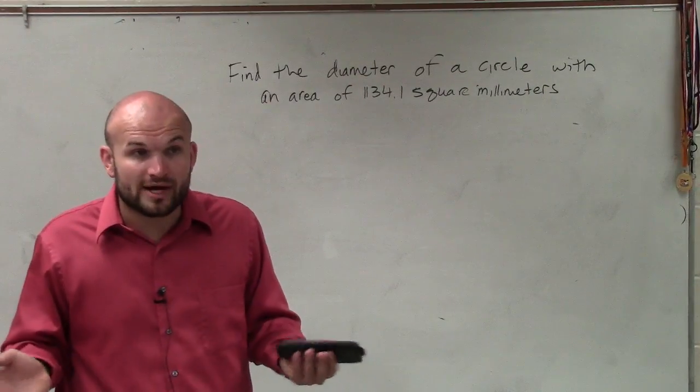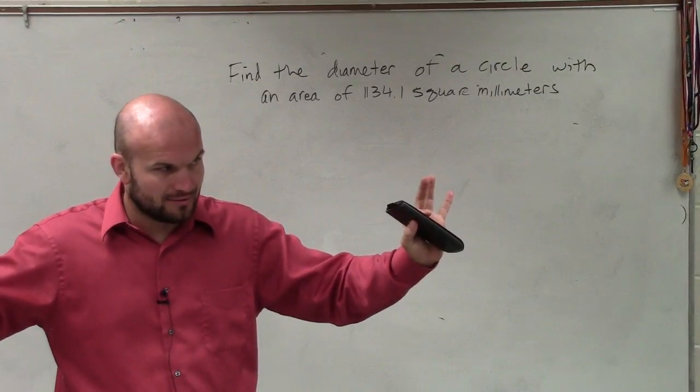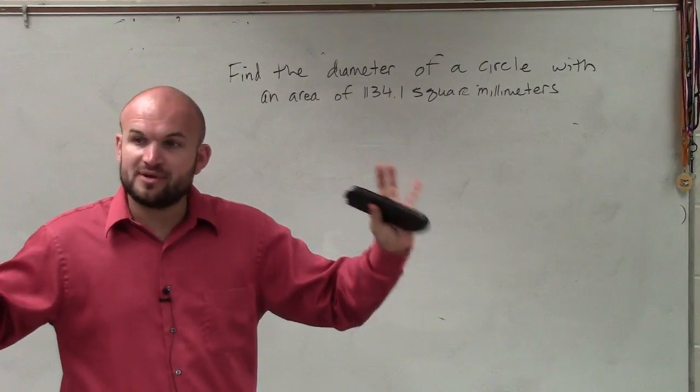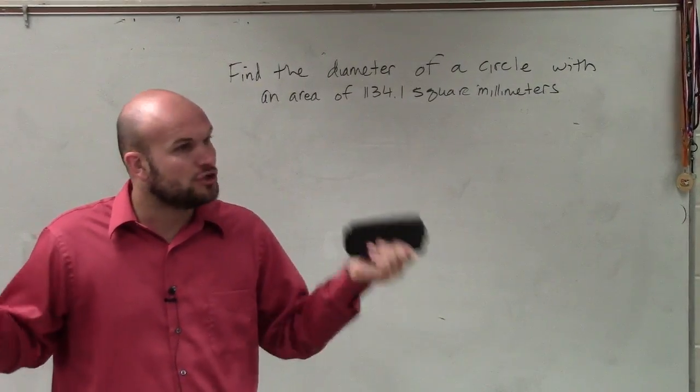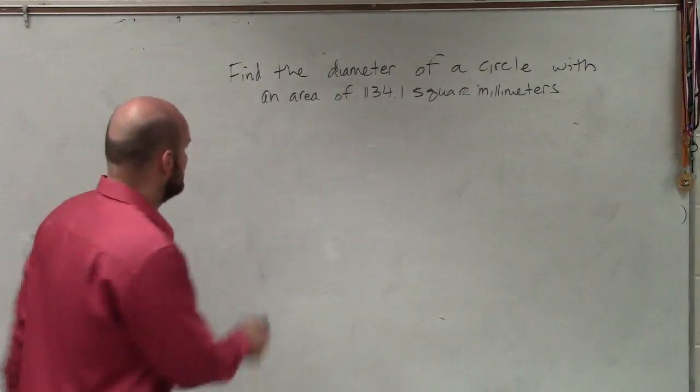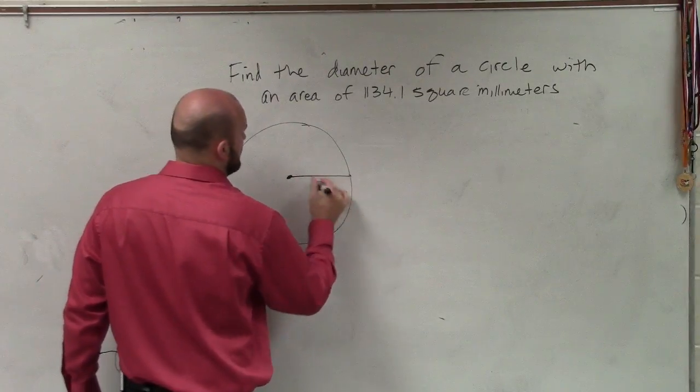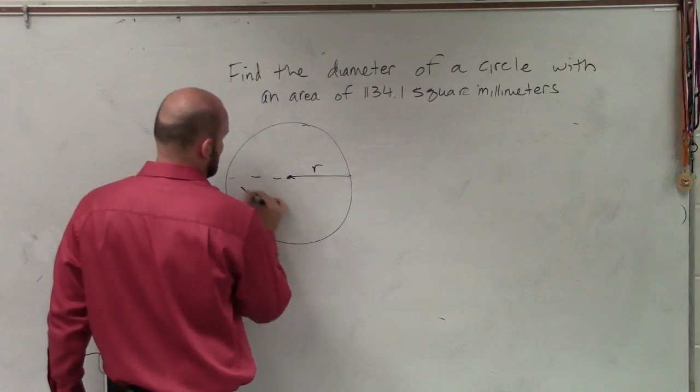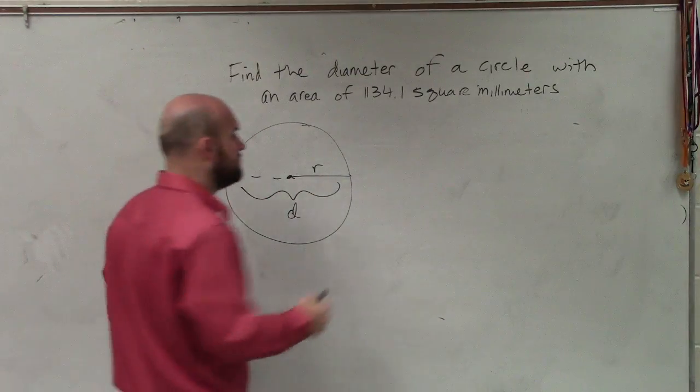So first thing, we're talking about a circle, right? So let's again, ladies and gentlemen, draw. Let's again draw a picture of a circle and an area. It's not that what I've been telling you guys from the start. Draw a picture and draw the formula. That's our radius. That's our diameter, right? Now let's draw the formula. Or let's write out the formula.